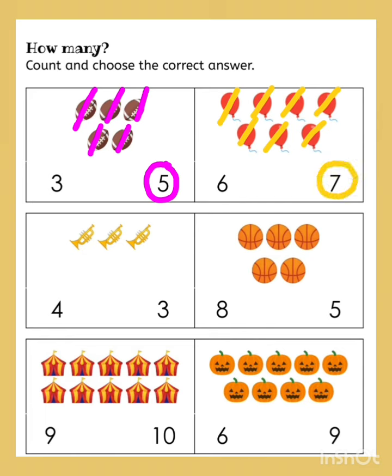Now come to down. You have to count the trumpet. So start counting. 1, 2, 3. There are 3 trumpets. So you have to circle the 3 number.